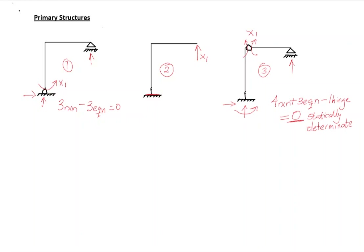I'm going to choose the first primary structure to continue working with. It doesn't matter which primary structure you choose — whether it's primary structure one, two, or three, your final moment diagram for the statically indeterminate structure will be the same. In the next step, you need to take your redundant force X1 as equal to zero and put only the external loads on the primary structure.